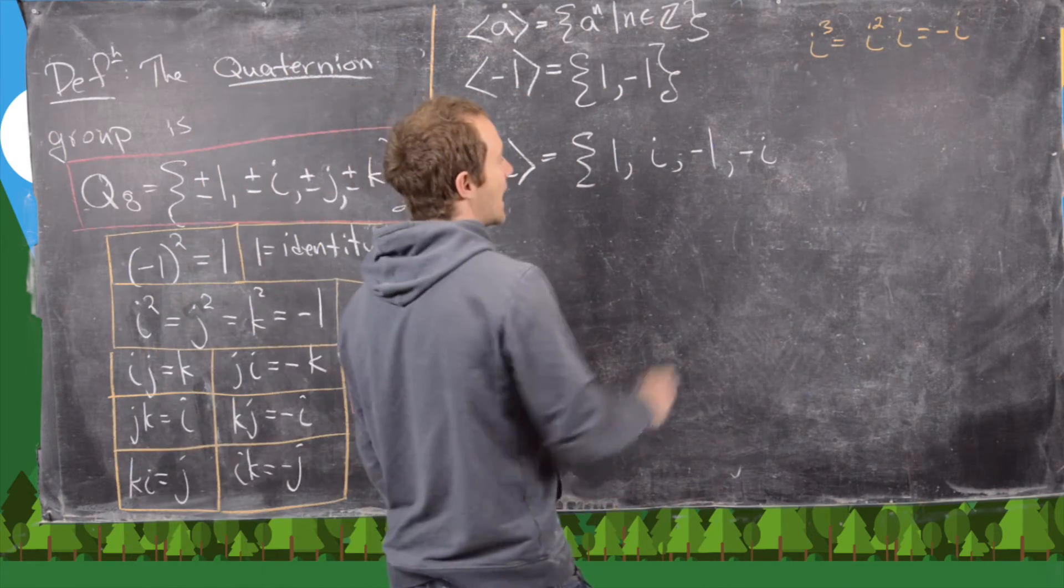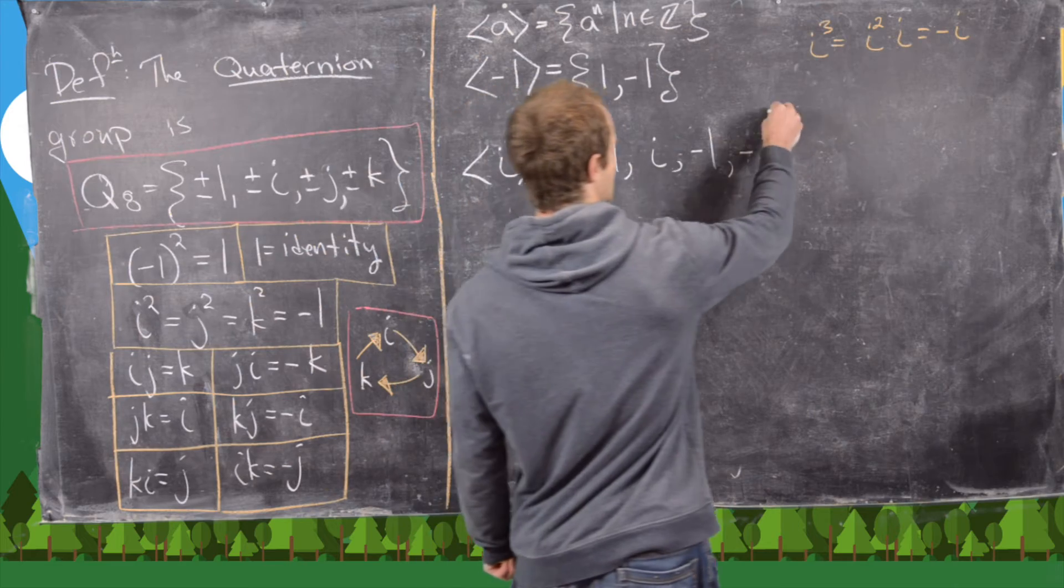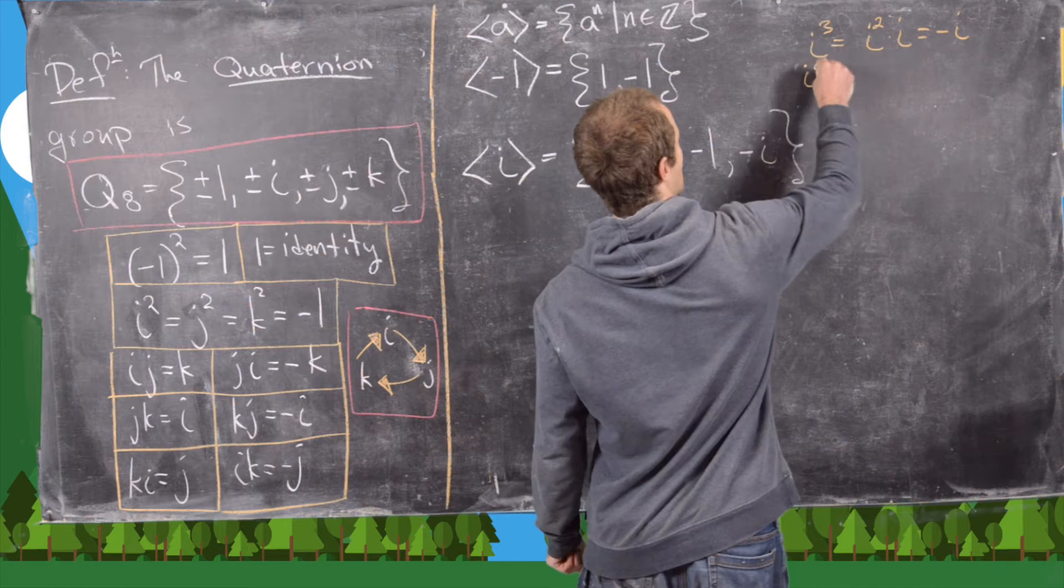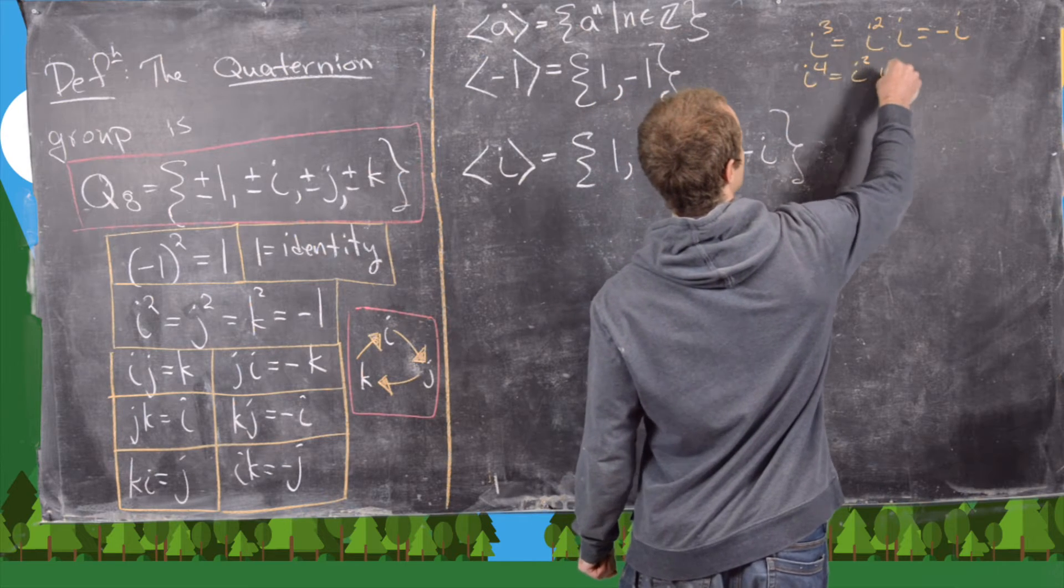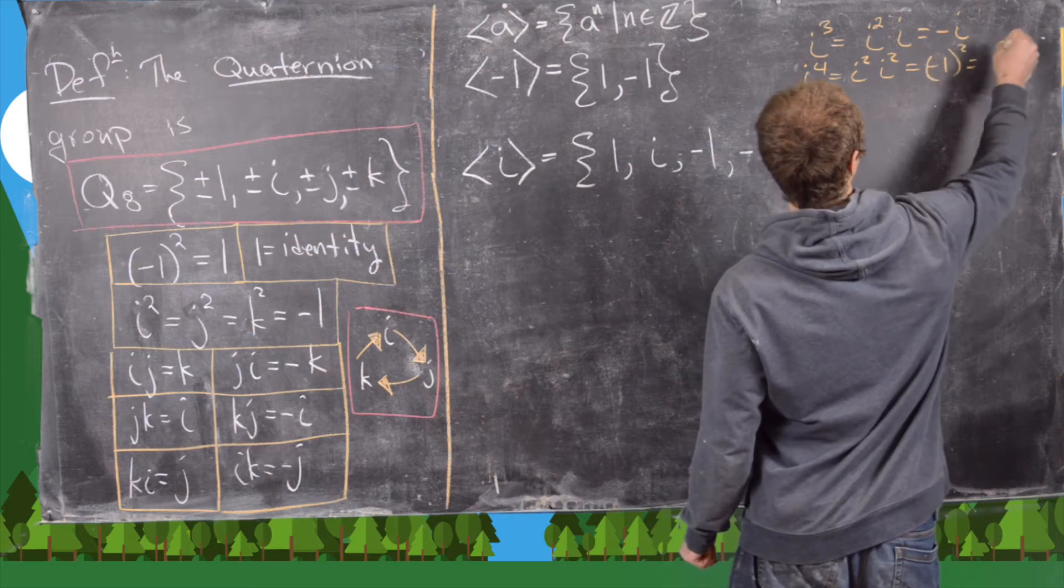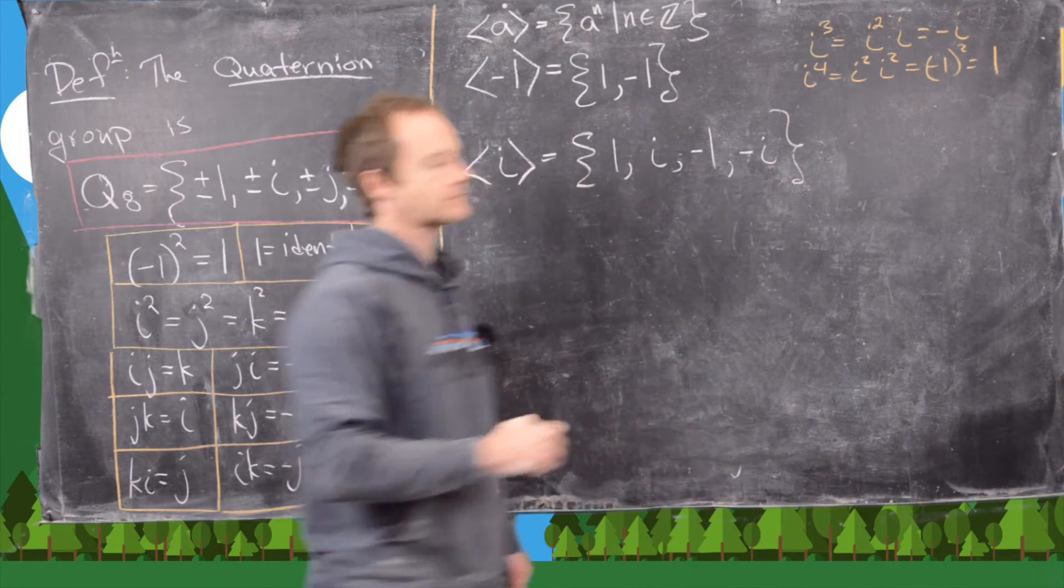But now if we do i to the 4th, which would be the next thing, we get back to the identity. And now let's check that. So notice i to the 4th is the same thing as i squared times i squared, which is negative 1 squared, which is 1.